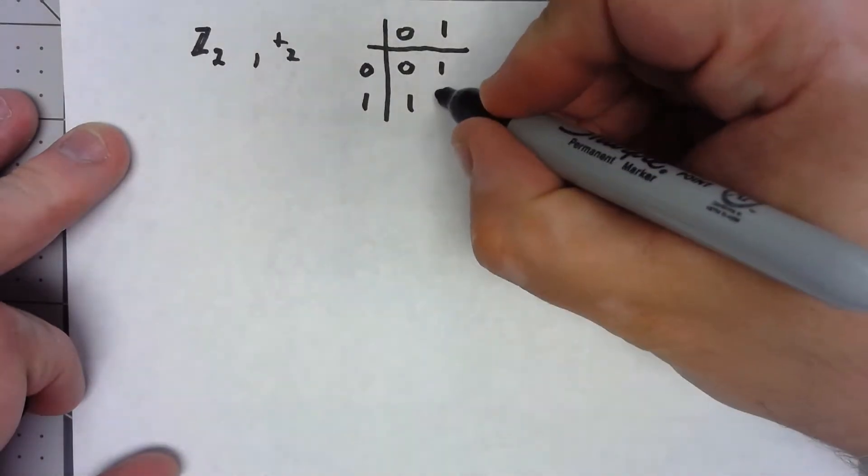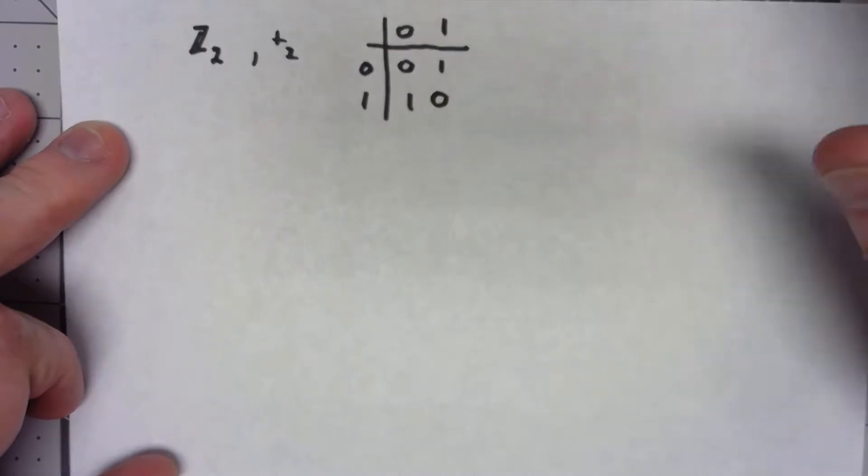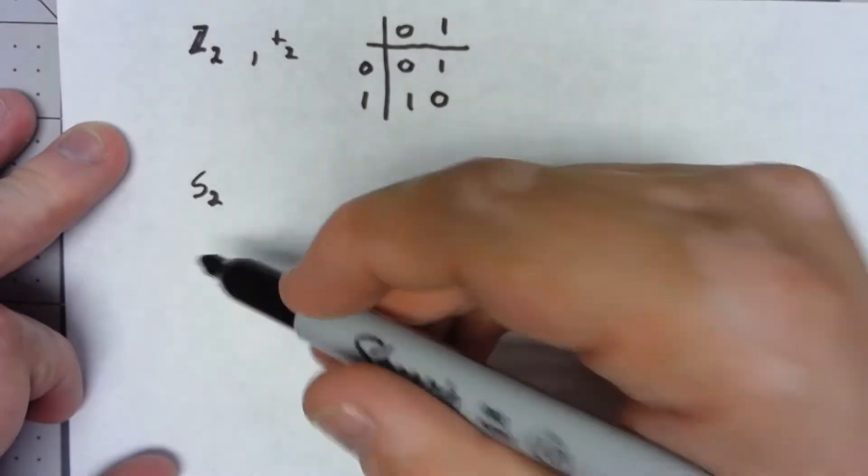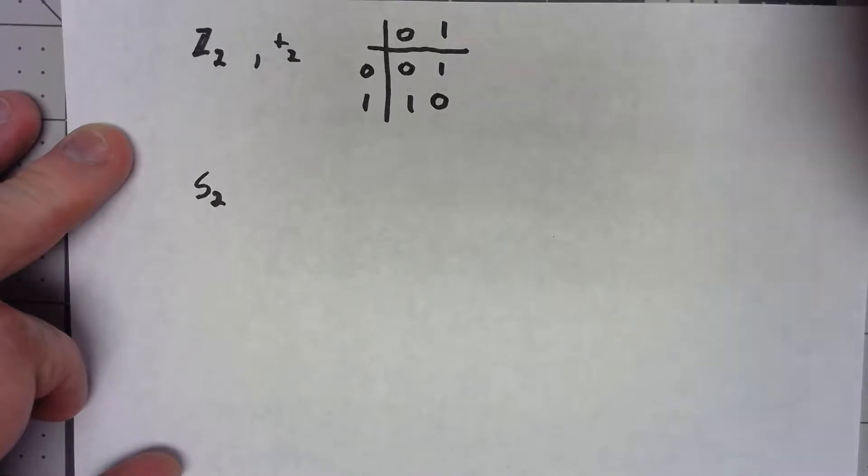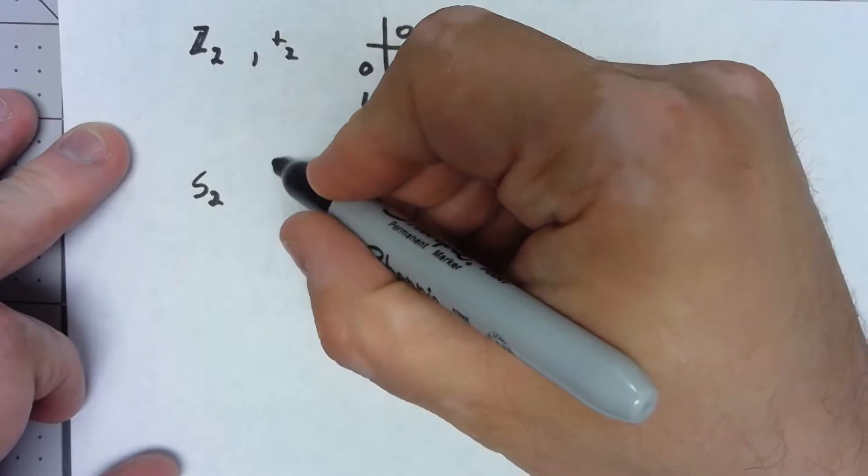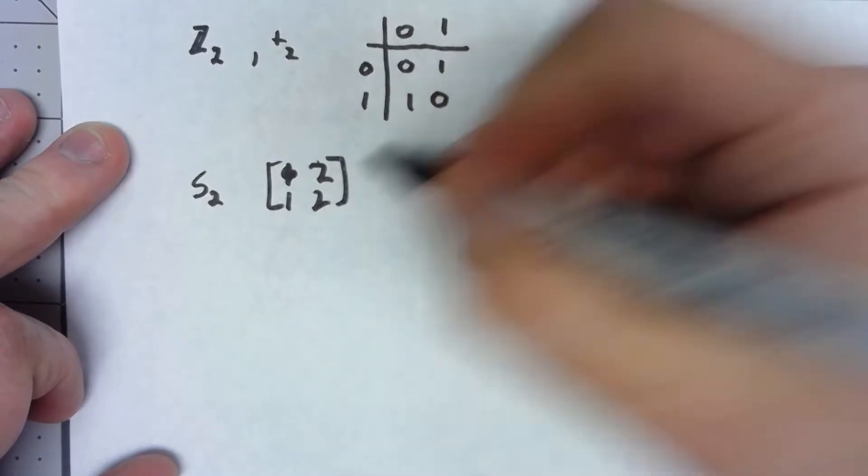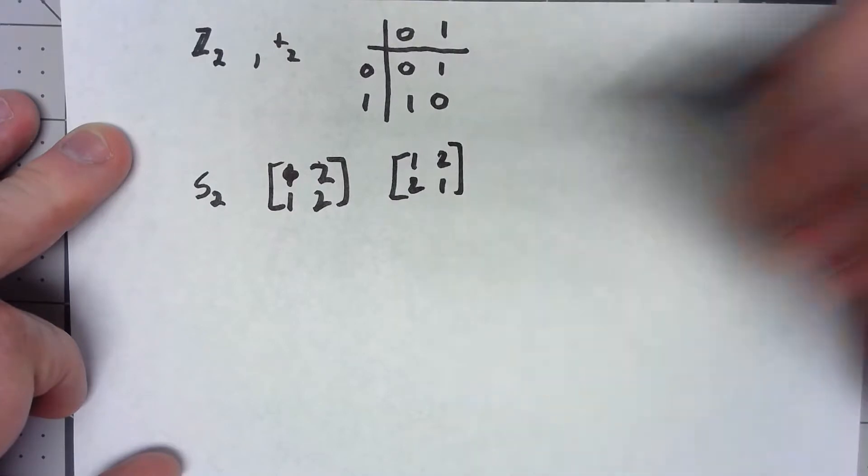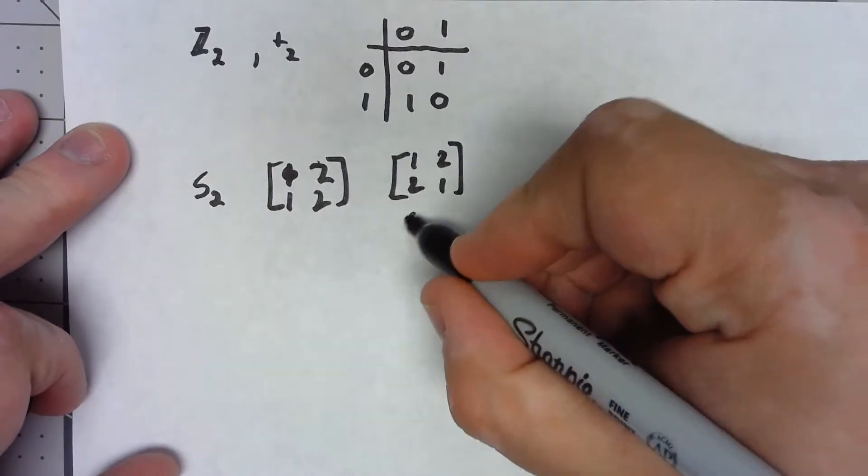The other group I want to take a look at is S2. This is the set of permutations on just the set 1 and 2. If we use the matrix notation, what we have is [1 2] goes to [1 2], which is the identity, and [1 2] goes to [2 1] is the only other element. Let's go ahead and use our cycle notation.